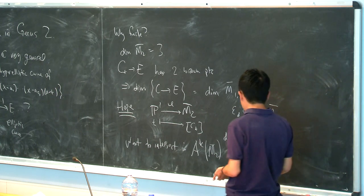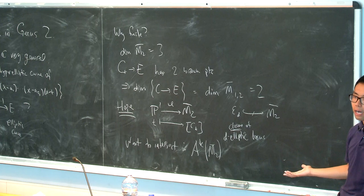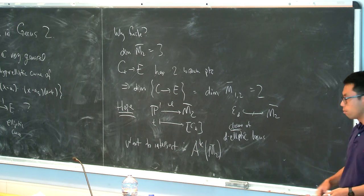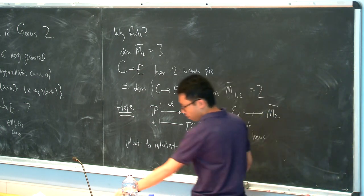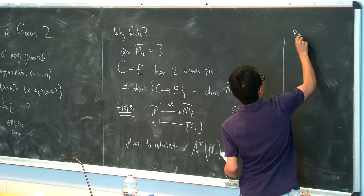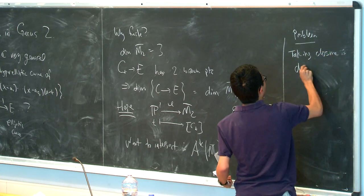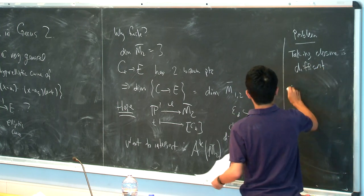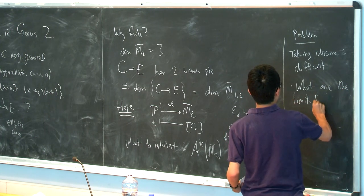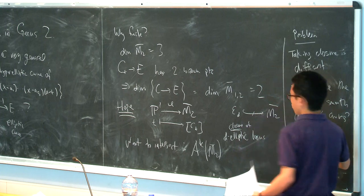And the problem with this is, well, there are a number of problems. One is that, a priori, we have no idea which boundary curves are in this closure. And another problem is, even if we did, you can start with some nice locus in M2 without a bar, and take its closure and get something arbitrarily bad. You could introduce horrible singularities. You could pick up really bad deformation spaces. So the problem is that taking closure is difficult.